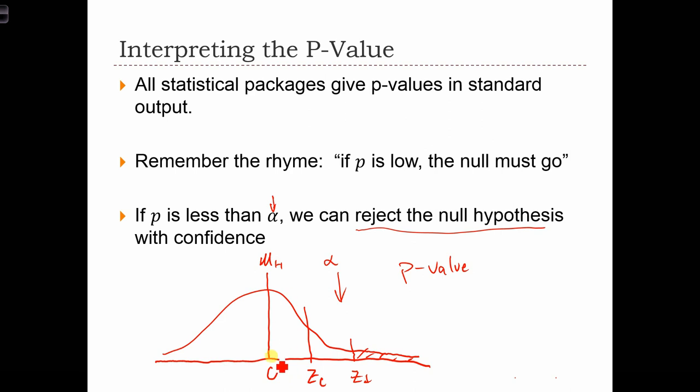So if mu h is true and we go out and collect a sample and find that the sample mean has a z-score over here of plus 2.5, there's still some small chance that the null hypothesis is true.